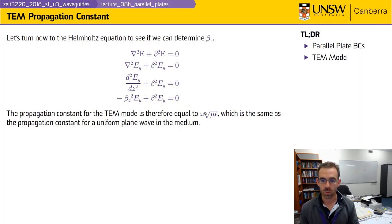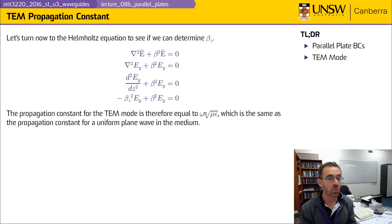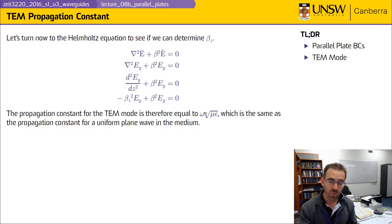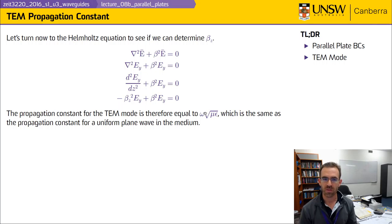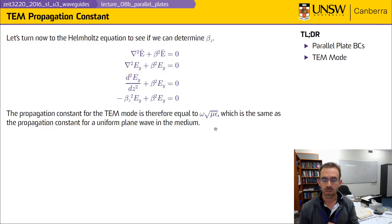Beta equals omega times the square root of mu epsilon. This means the TEM mode on a transmission line propagates with the same propagation characteristics — the same phase velocity, the same group velocity — as a plane wave in the medium between the parallel plates. The phase velocity is omega over beta, which equals 1 over the square root of mu epsilon, independent of frequency. This is something you should be familiar with from your transmission lines work.